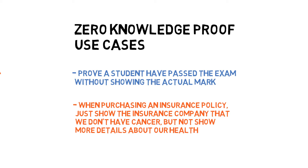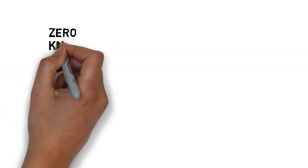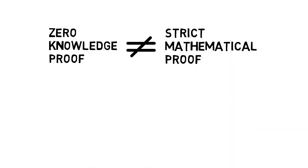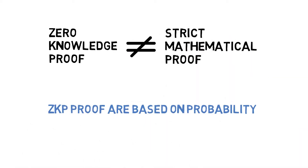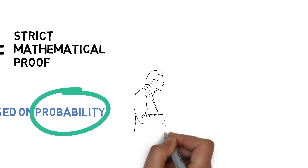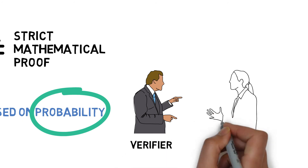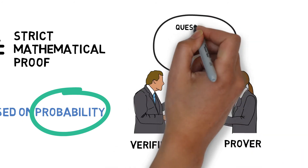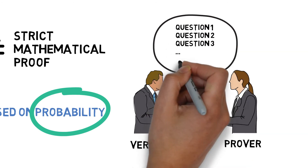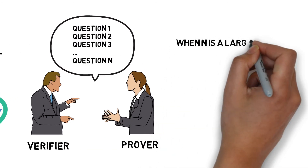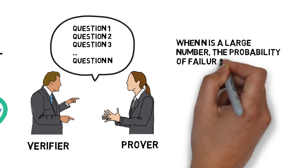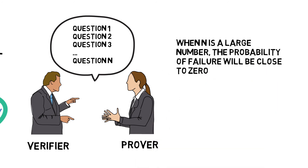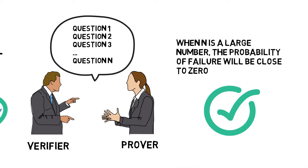Generally, the proof is not the same as the strict mathematical proof which uses axioms and logic. Most ZKP proofs are based on mathematical probability, which means the result can be proved from a statistical point of view. The verifier will randomly ask the prover for the proof. If the prover can always provide the correct result after a few times, although the possibility of failure is not zero but very close to it, that small chance of failure can be ignored and the proof is considered successful.